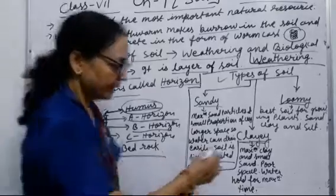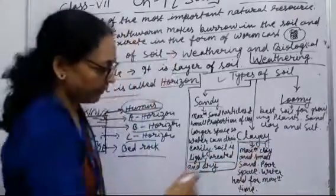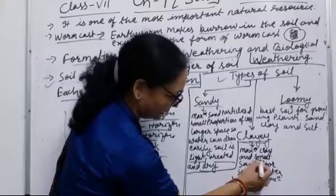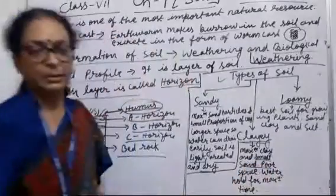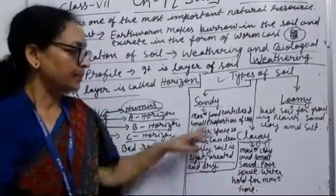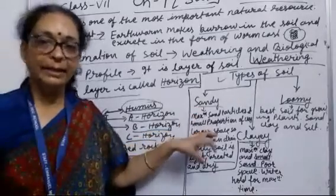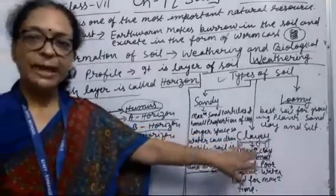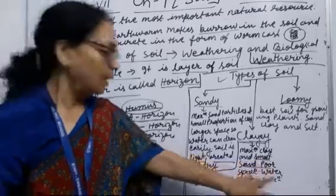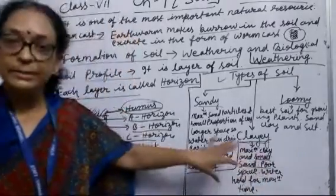Now the second is clay. Clay soil means maximum amount of clay and small amount of sand particles. In sandy soil, sand particles are very large, but clay soil means clay particles are very small.